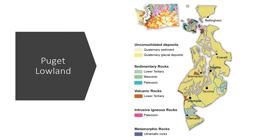Both glacial till and outwash make up most of Puget Sound's surface. As the glacier moved, it scraped off sediment from the ground and moved it on top of, within, beneath, and in front of the ice. Glaciers can lift, mix, and move rocks from the size of large boulders to fine grains of clay. Most of the Puget Lowland is covered in glacial sediment, but exposed bedrock can still be found.